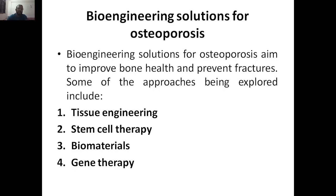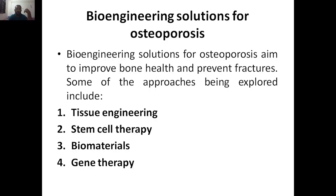So what are the bioengineering solutions for osteoporosis? The bioengineering solutions for osteoporosis are almost similar to those for muscular dystrophy. We used gene therapy, stem cell therapy, tissue engineering, and exoskeleton technology there. Here, instead of exoskeleton technology, we are mentioning biomaterials. The bioengineering solutions for osteoporosis aim to improve bone health and prevent fractures. The approaches being explored include tissue engineering, stem cell therapy, biomaterials, and gene therapy.